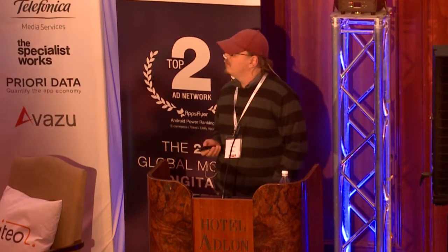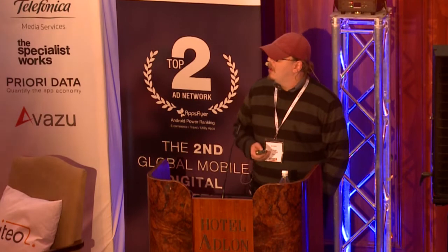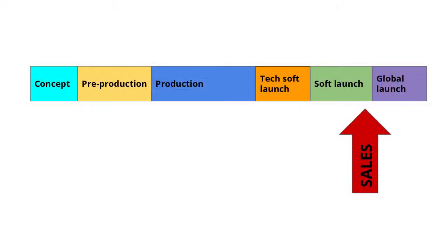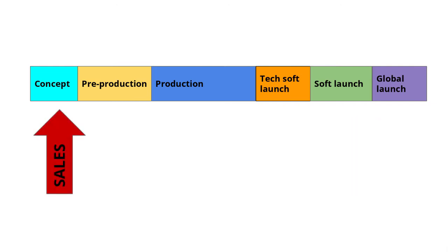Looking at the traditional timeline of an app's lifecycle, you start with concepting, prototyping, production stages, soft launch, and then global launch. Sales very often comes in towards the end of soft launch, moving into global launch. But what I would argue is that it should come in during concepting and prototyping — that sort of stage.